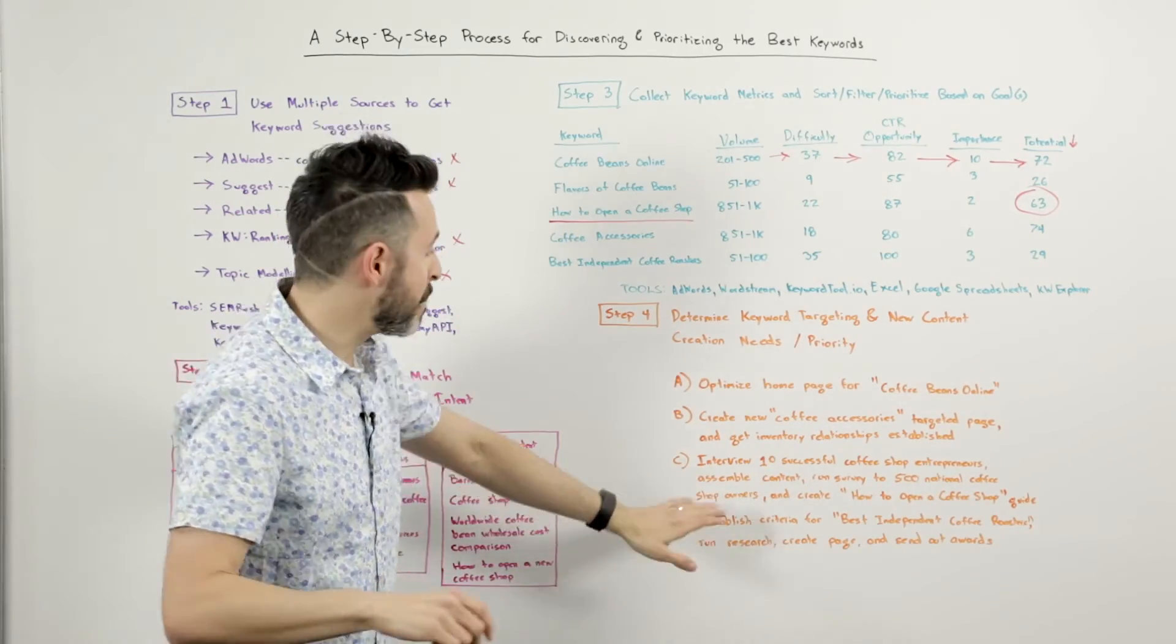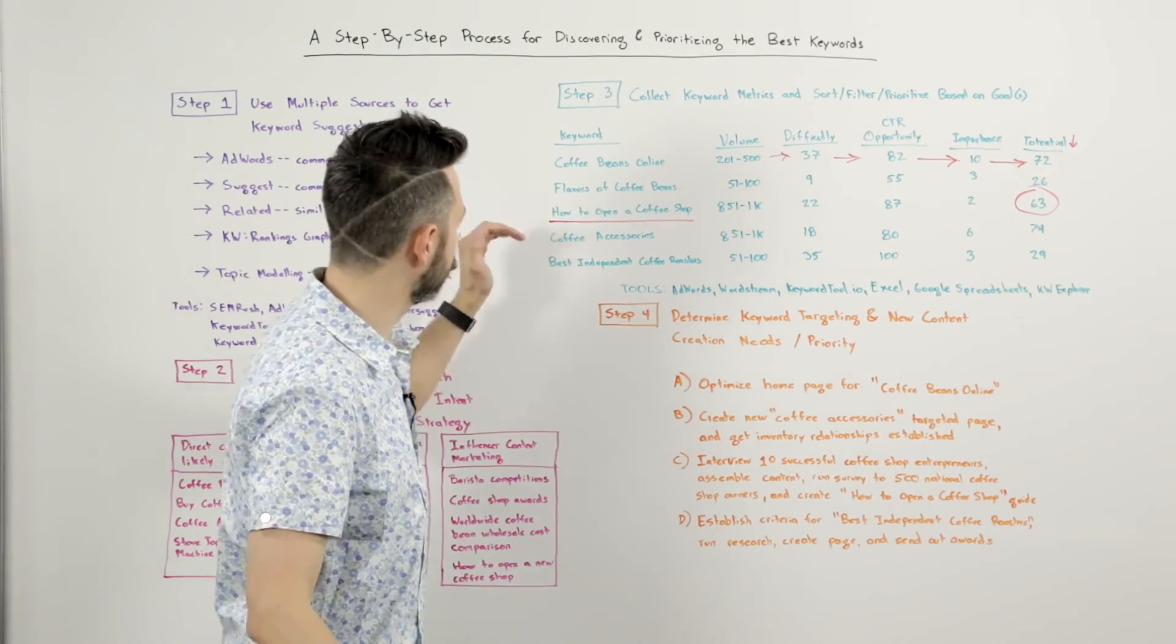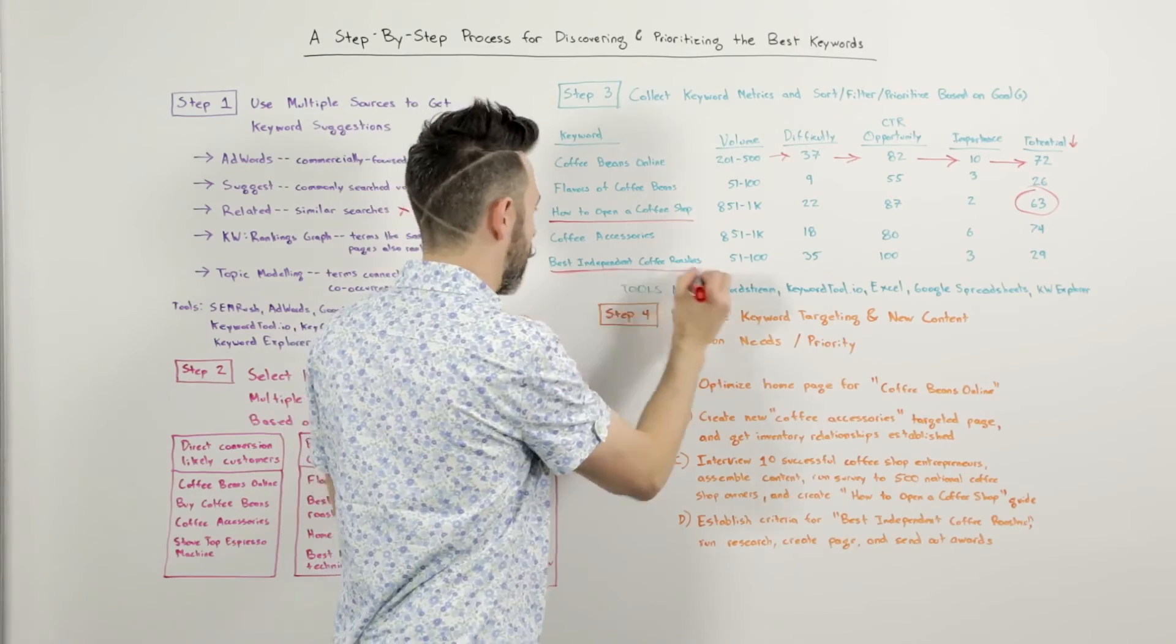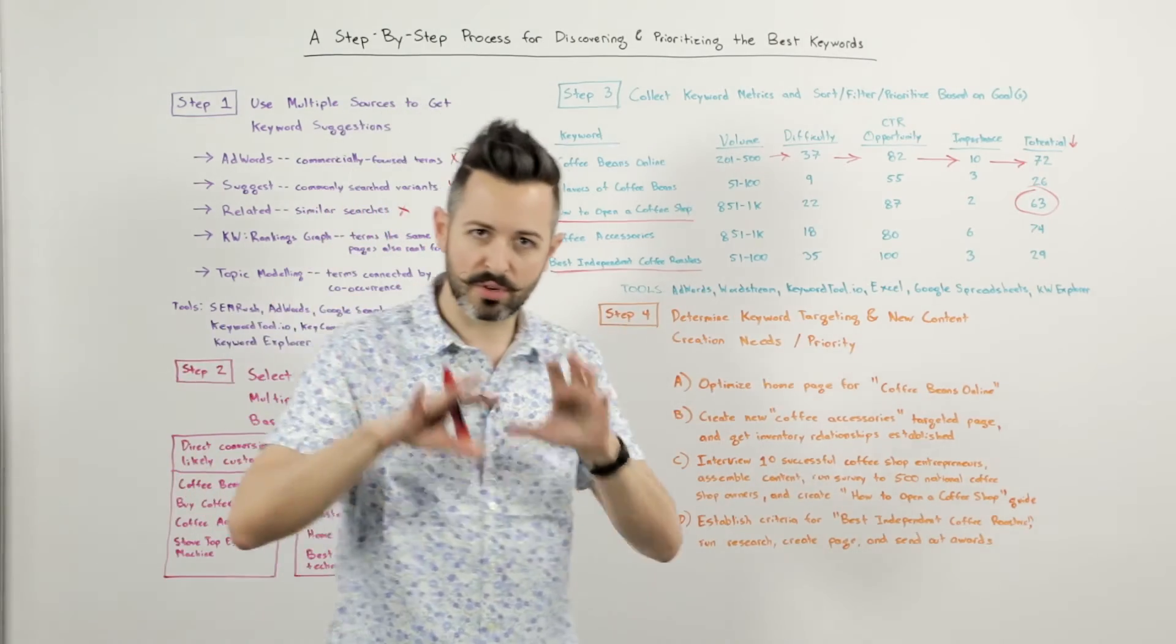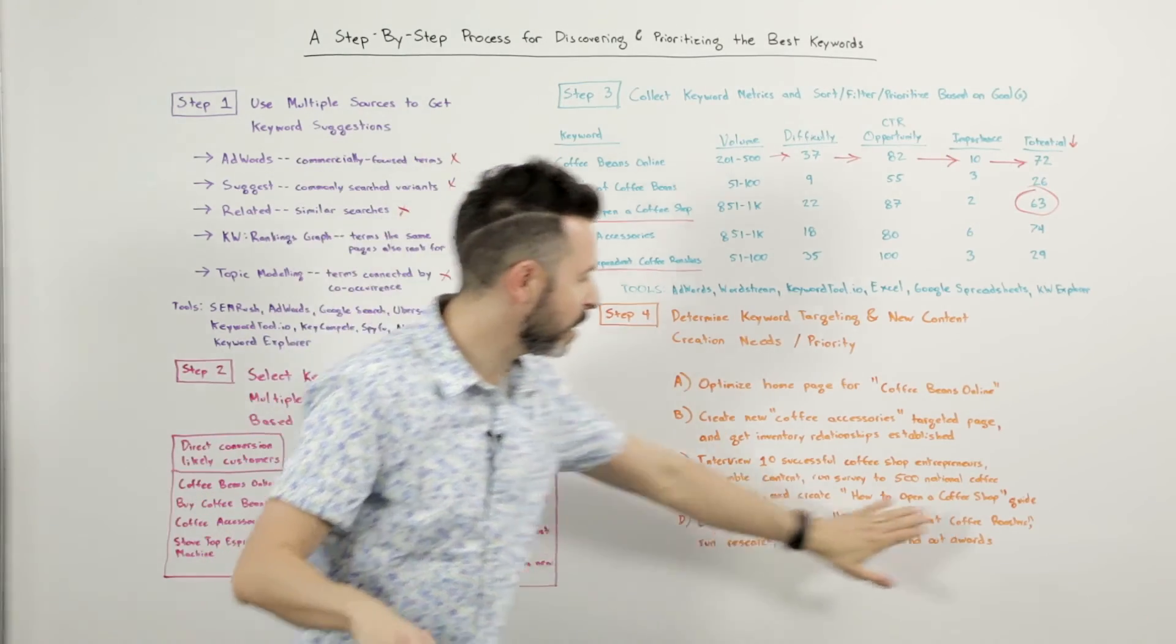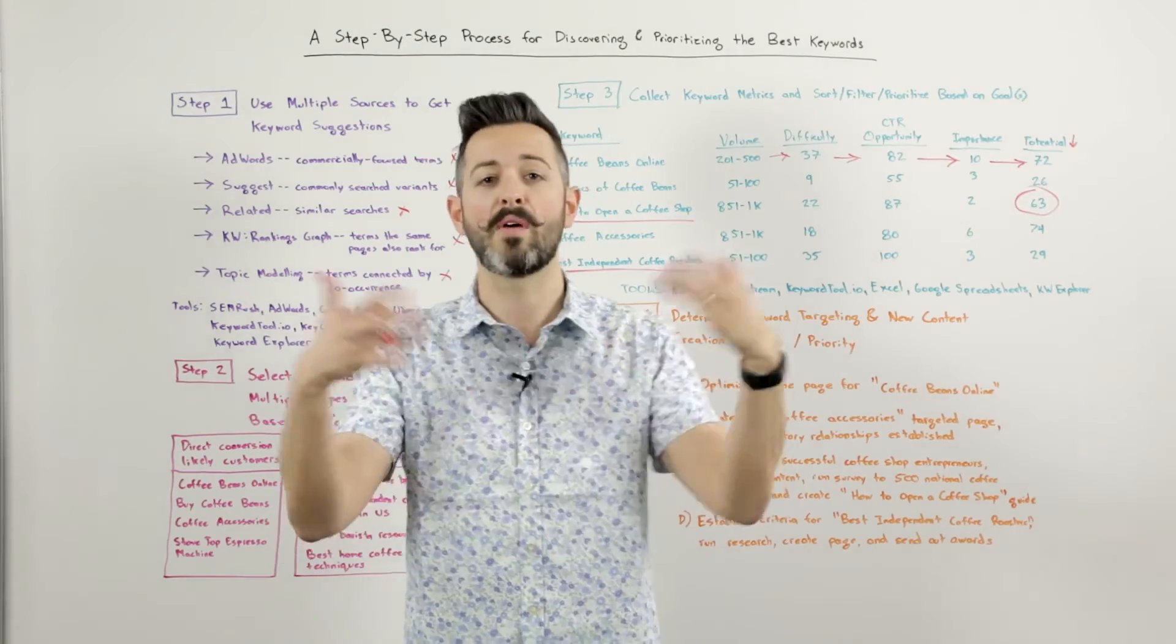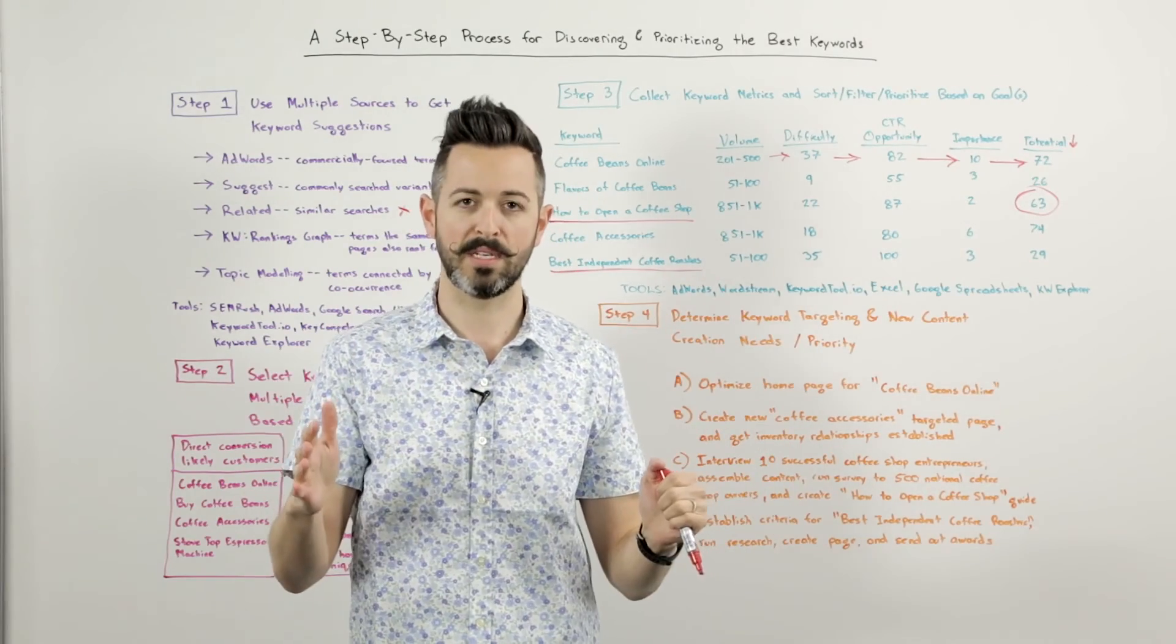And finally, I might say, hey, I really like that best independent coffee roaster. That keyword looks real strong to me. I want to target that one too. That's also going to go into my content marketing efforts so I'm going to establish some criteria for that one. I'm going to do some research and I'm going to send out awards to the winners after we pick those through whatever process we decide.